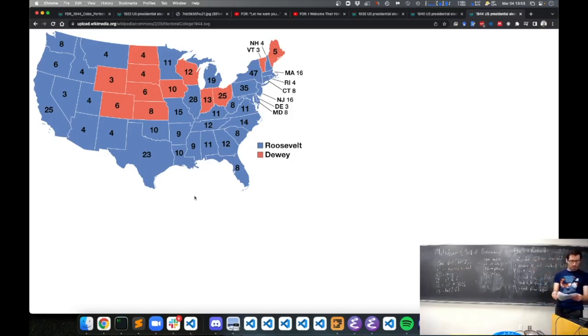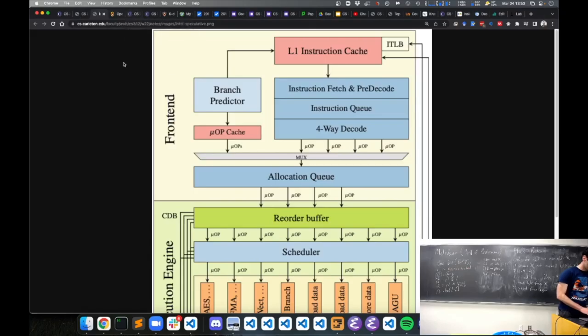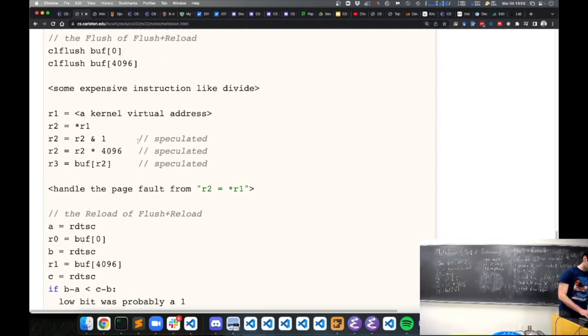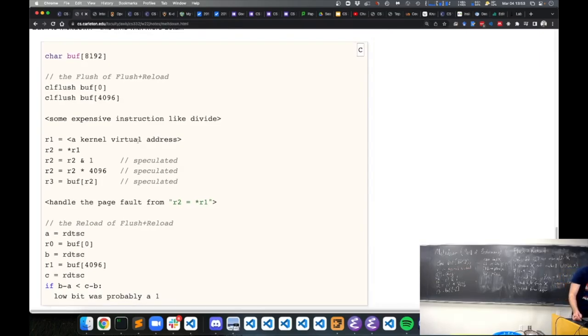So, let's actually mount our meltdown attack. Okay. So, I'm gonna pull up some code here. All right. So, here's our kind of full attack. We have some buffer, some local memory. And we do the flush part of flush and reload. Make sure that neither page of our buffer is in the cache. And then, we execute some slow operation like a division or fetch from main memory. So, this is probably something that's gonna take a while.